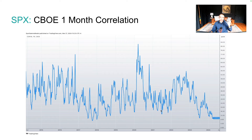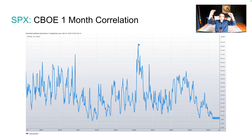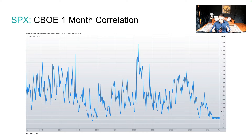Correlation snaps towards one when markets crash — like in 2020, all stocks sell off and correlation spikes. Currently correlation is very low. Breadth is weak, which ties into this idea, and certain stocks are moving asymmetrically to the upside.